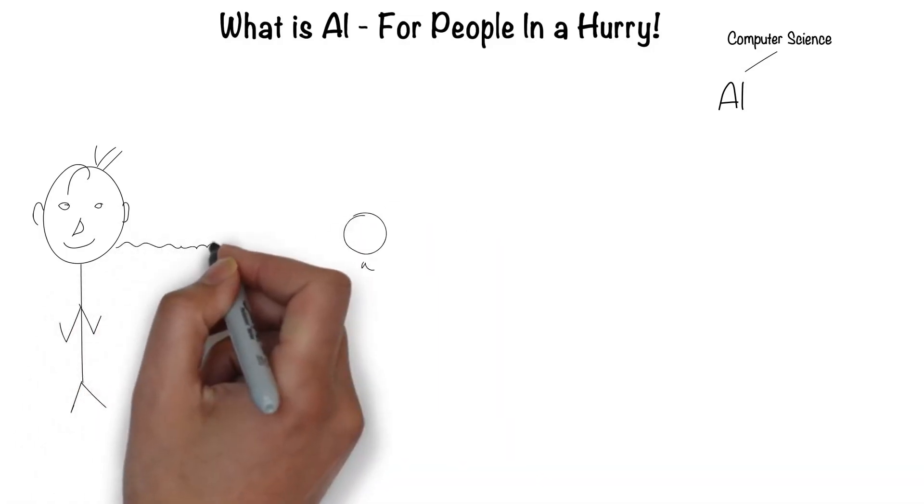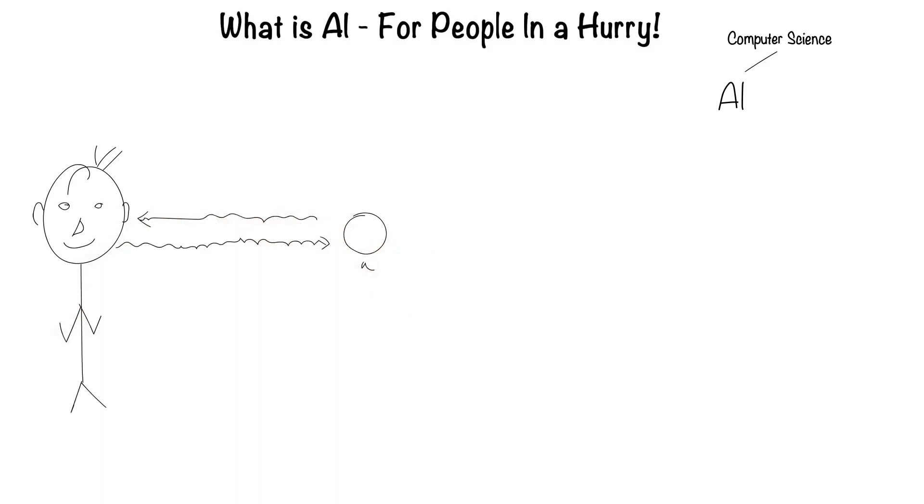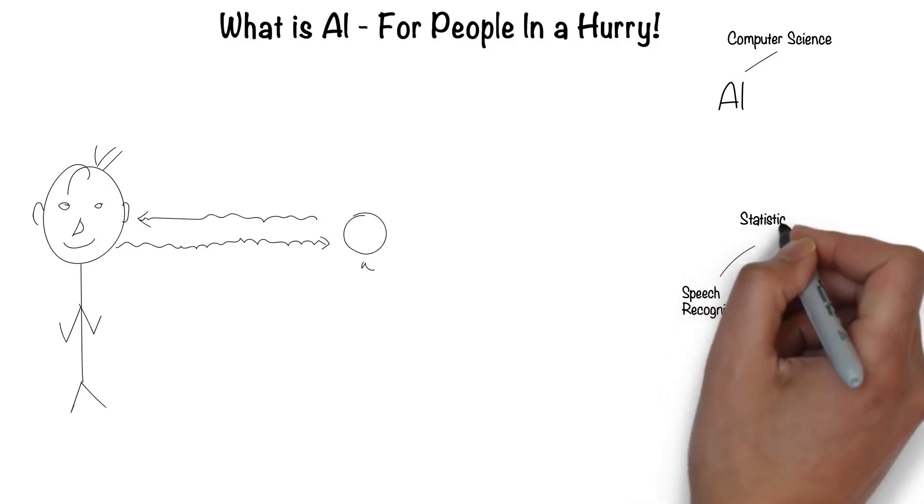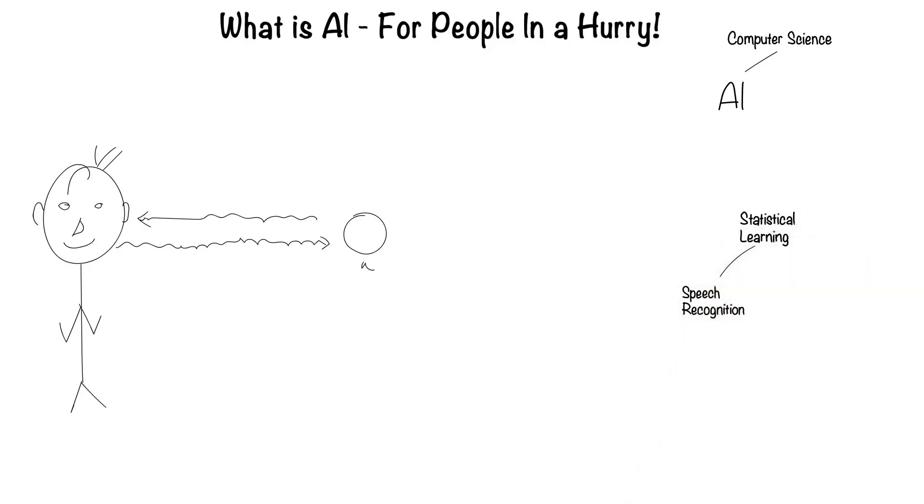Humans can speak and listen to communicate through language. This is the field of speech recognition. Much of speech recognition is statistically based, hence it's called statistical learning.